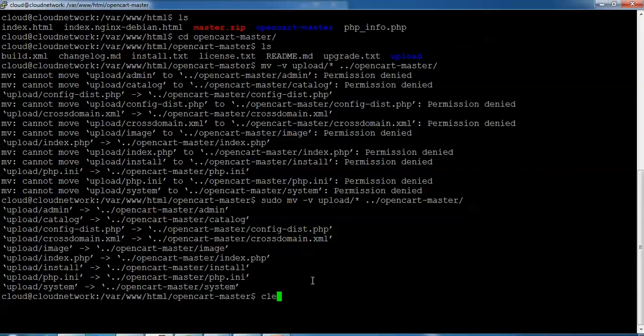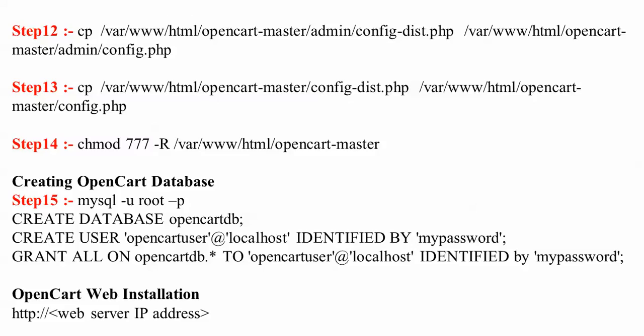Now the procedure is to copy the config-dist.php file in the opencart and admin folder. Copy config-dist.php into config.php for the main folder, and then do the same for the admin folder — copy config-dist.php into config.php inside the admin directory.